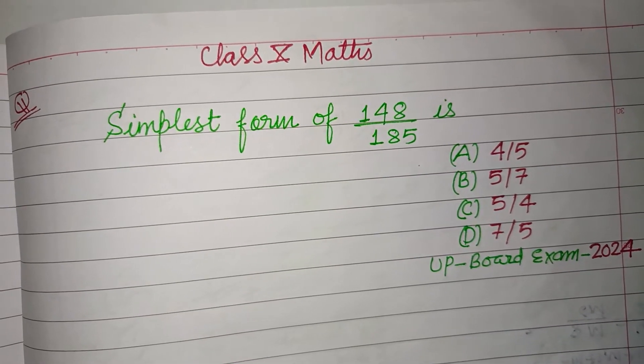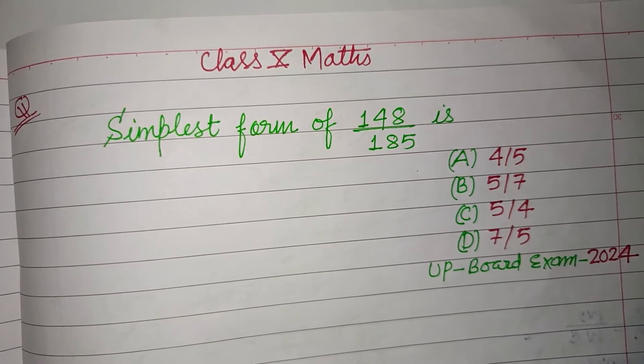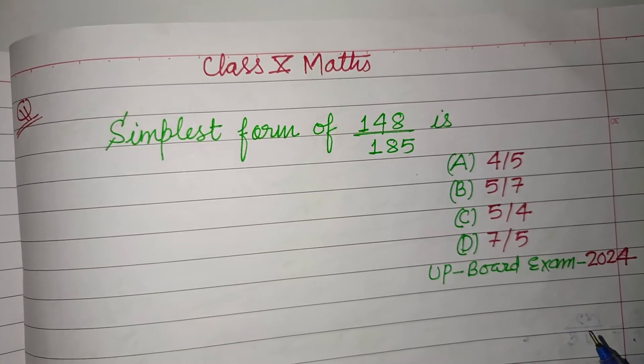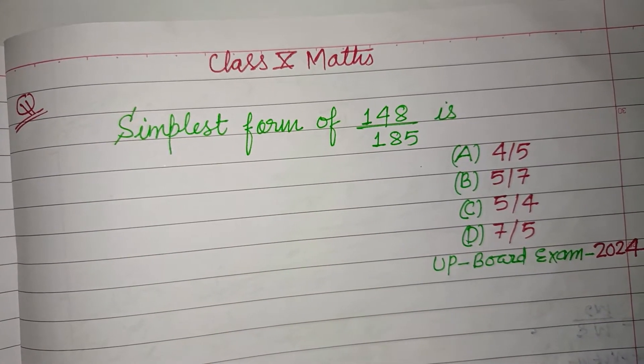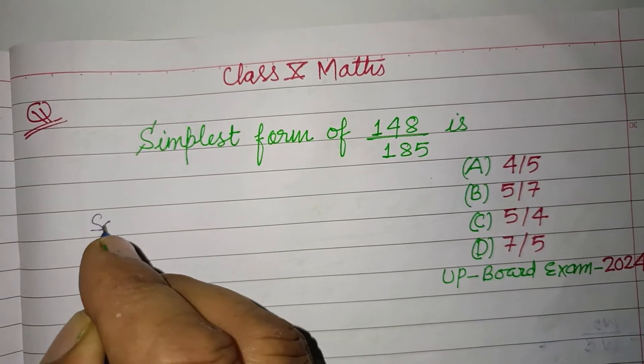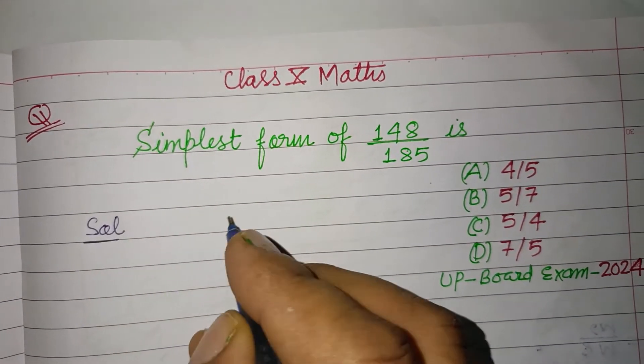Hello viewers, warm welcome to this YouTube channel. This is a question from UP Board Exam 2024, Class 10. The question asks: what is the simplest form of 148 over 185? Students, the simplest form of a fraction can be found by identifying common factors.